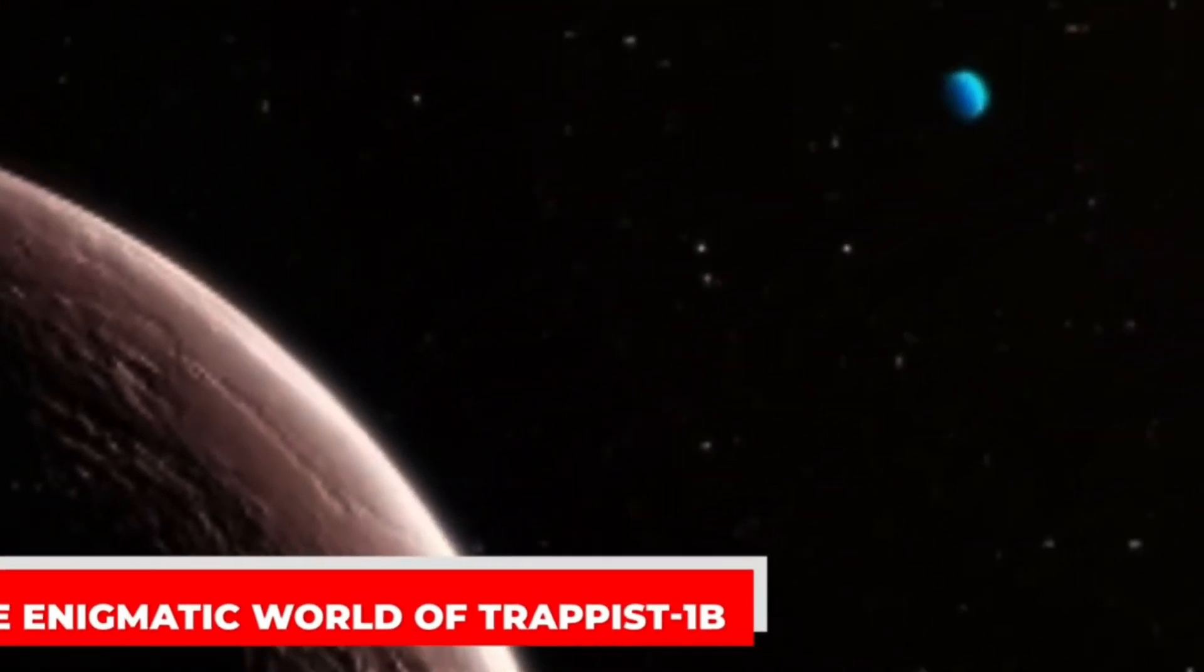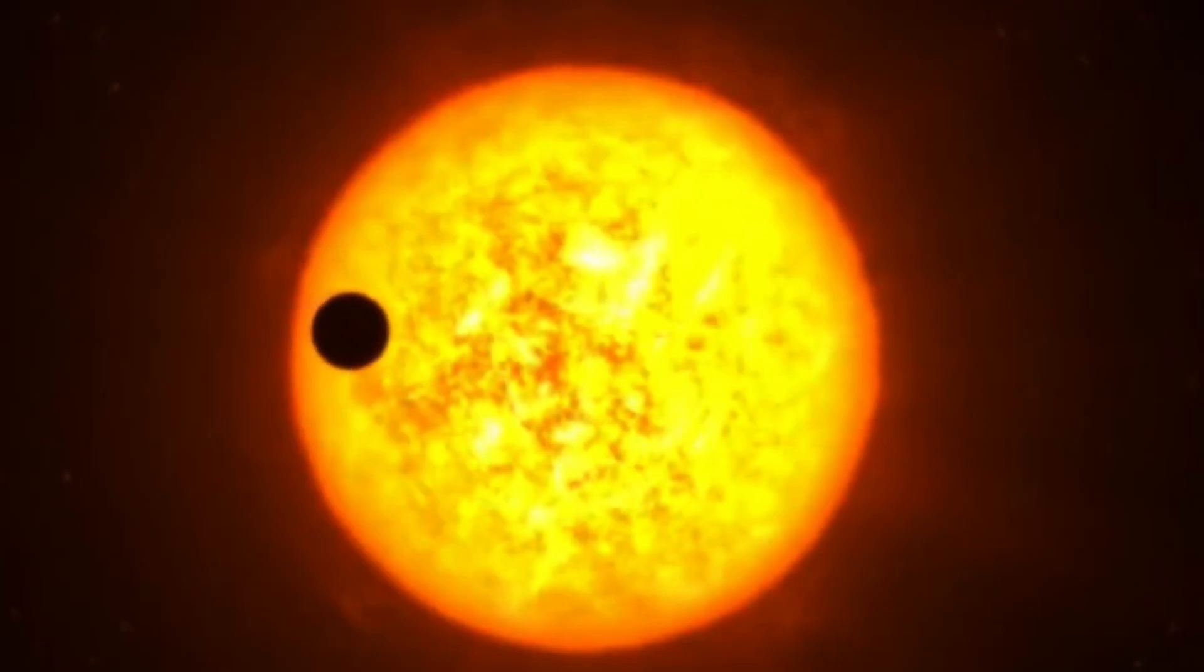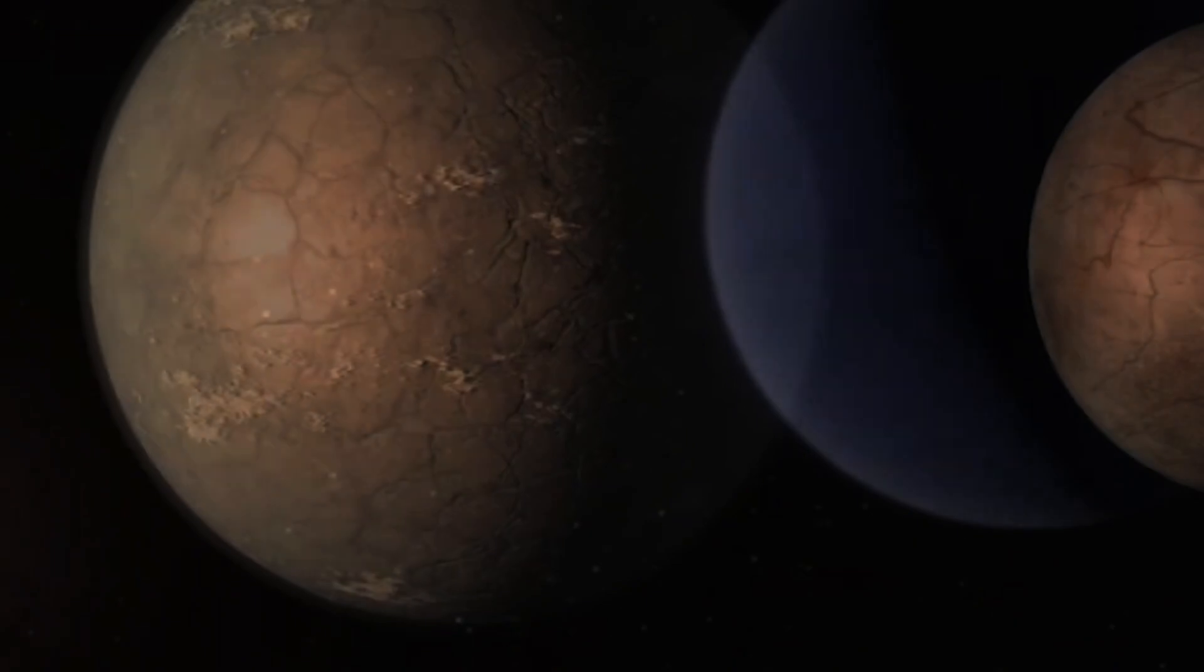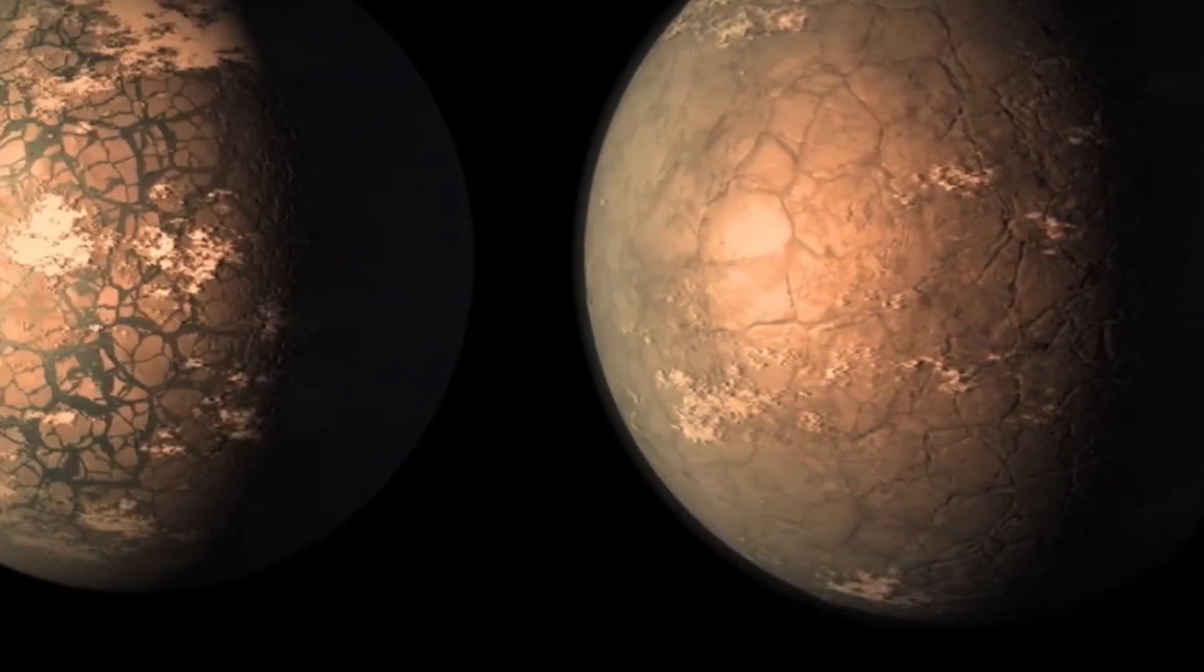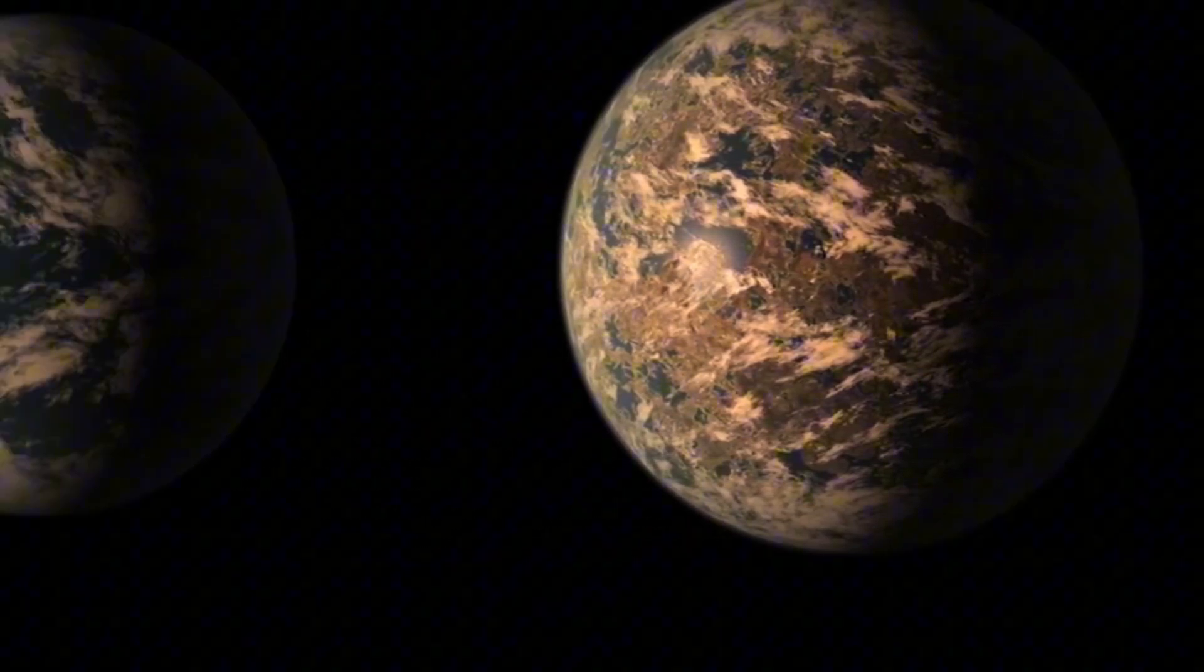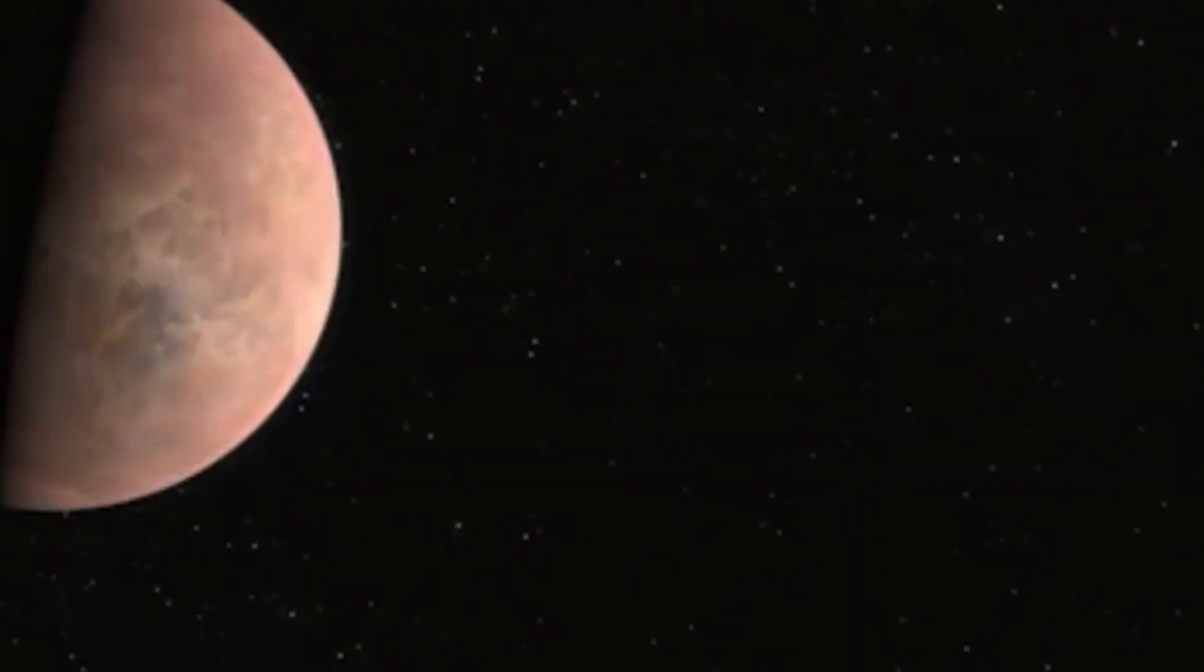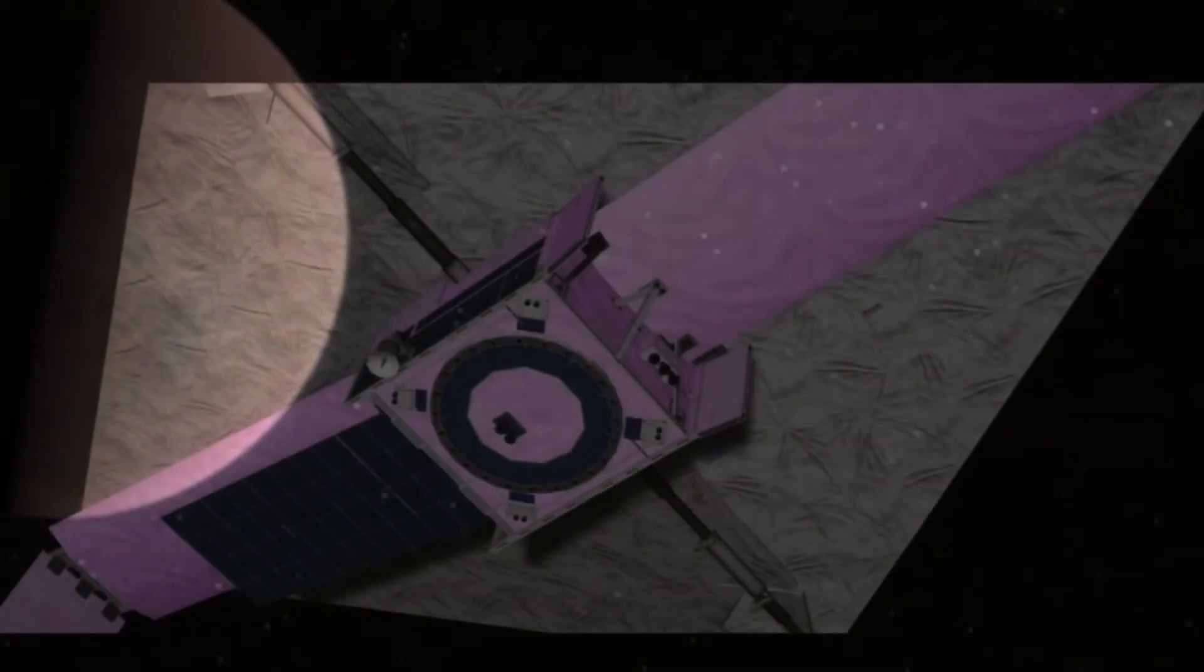Five years ago, NASA's Spitzer Space Telescope made a groundbreaking discovery, finding seven rocky planets orbiting a distant star known as TRAPPIST-1. Now, the James Webb Space Telescope, JWST, is shedding new light on one of these planets, TRAPPIST-1b, using its advanced heat-sensing capabilities.